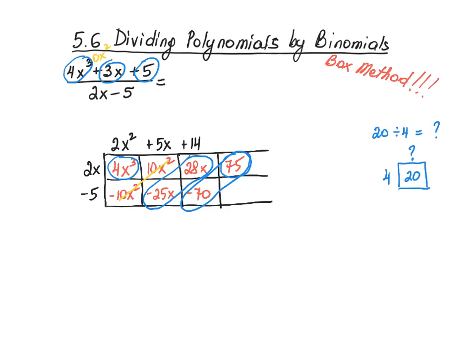So my result looks like this: 2x² + 5x + 14 plus 75, the remainder, over 2x - 5. If you look back at another video where I recorded dividing these two polynomials using the long division process, you will see that the resulting expression was identical to the one we got here.